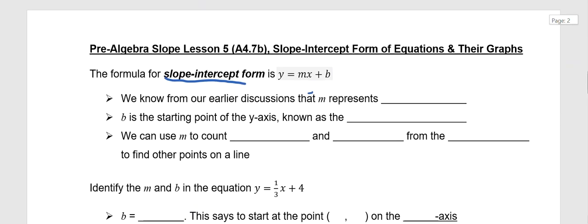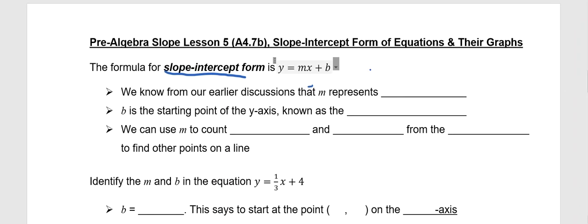But what is going to get replaced with values is the m and the b. The m, we should know by now, from our earlier discussions, is what we know to be the variable for slope. And we've learned that with the slope formula from one of our recent lessons. So m represents slope.